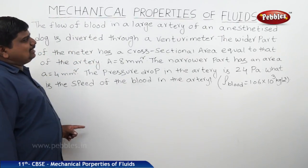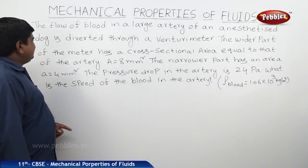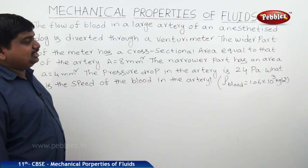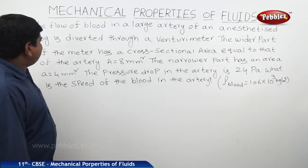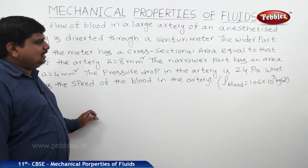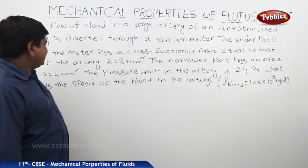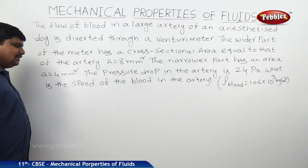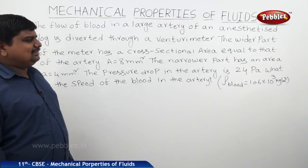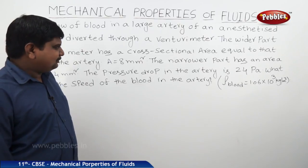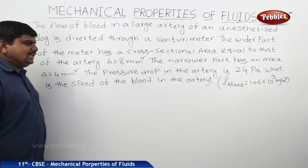The flow of blood in a large artery of an anesthetized dog is diverted through a venturimeter. The wider part of the meter has a cross-sectional area equal to that of the artery, A = 8 mm². The narrower part has area a = 4 mm². The pressure drop in the artery is 24 Pa. What is the speed of the blood in the artery?